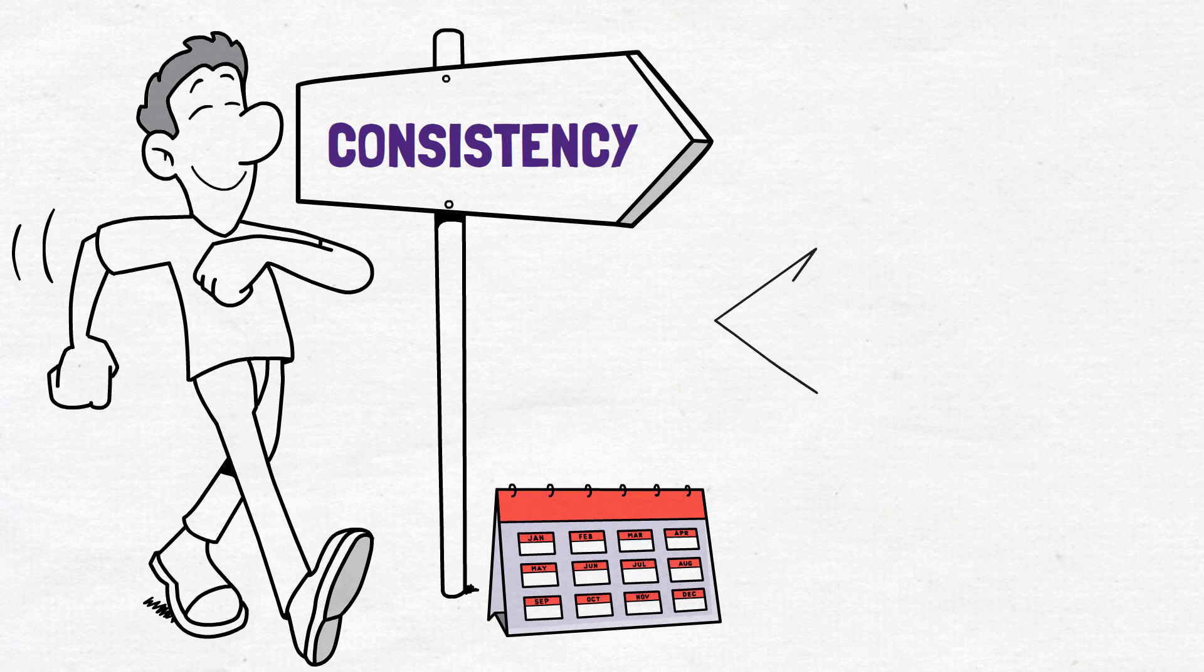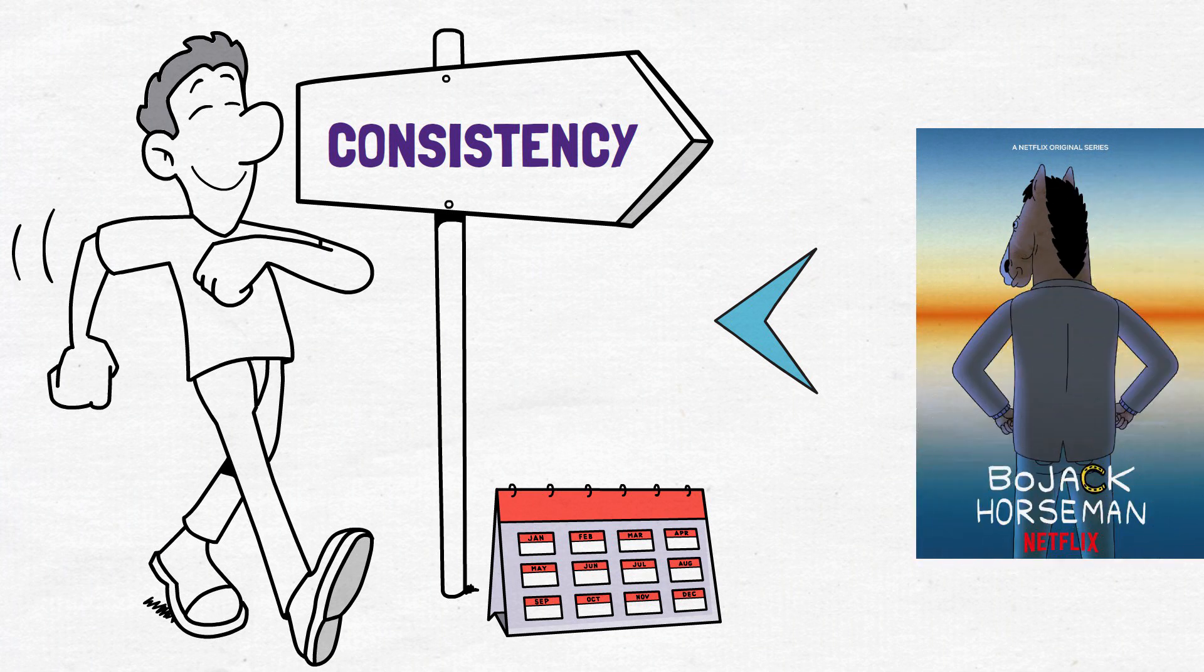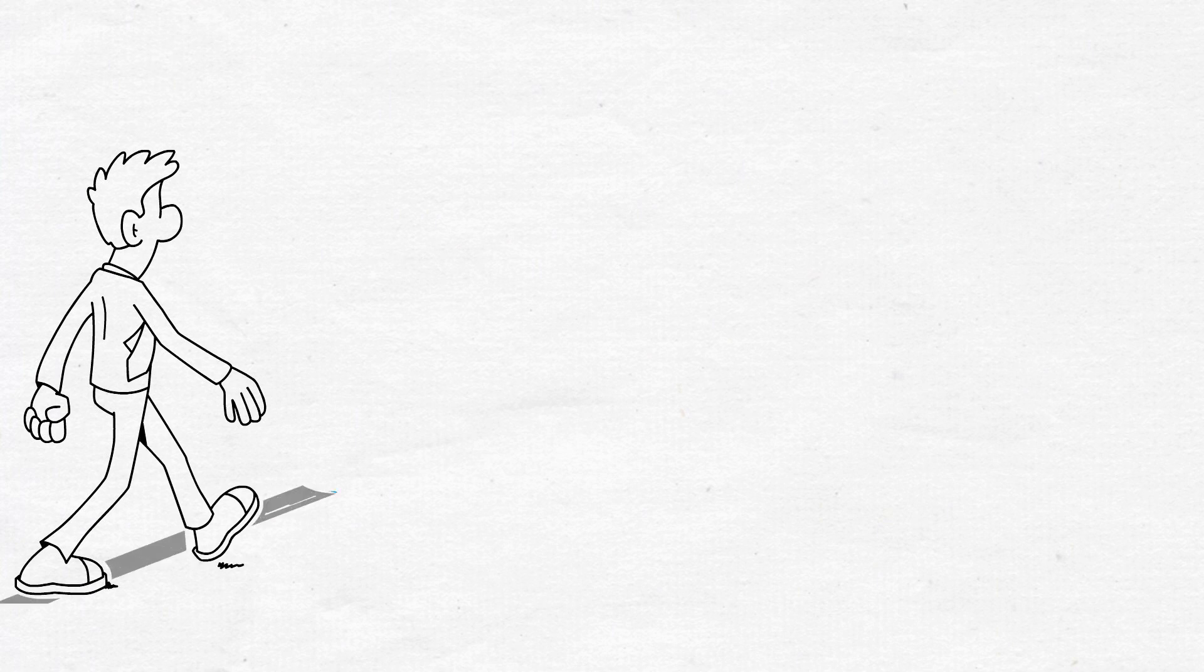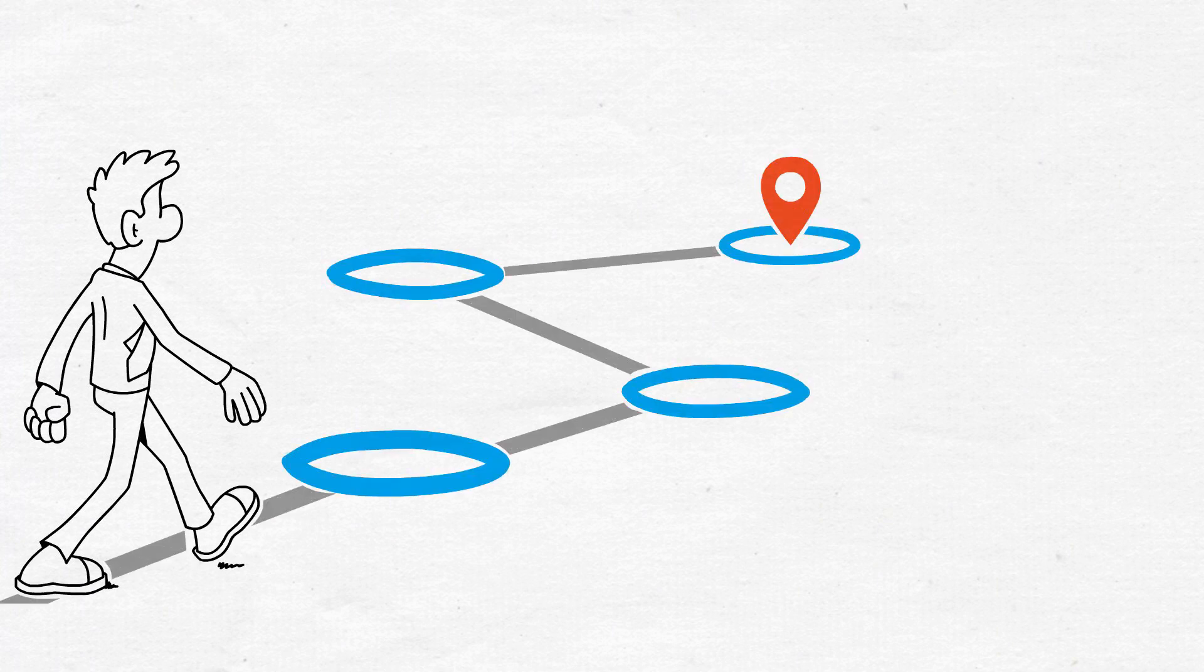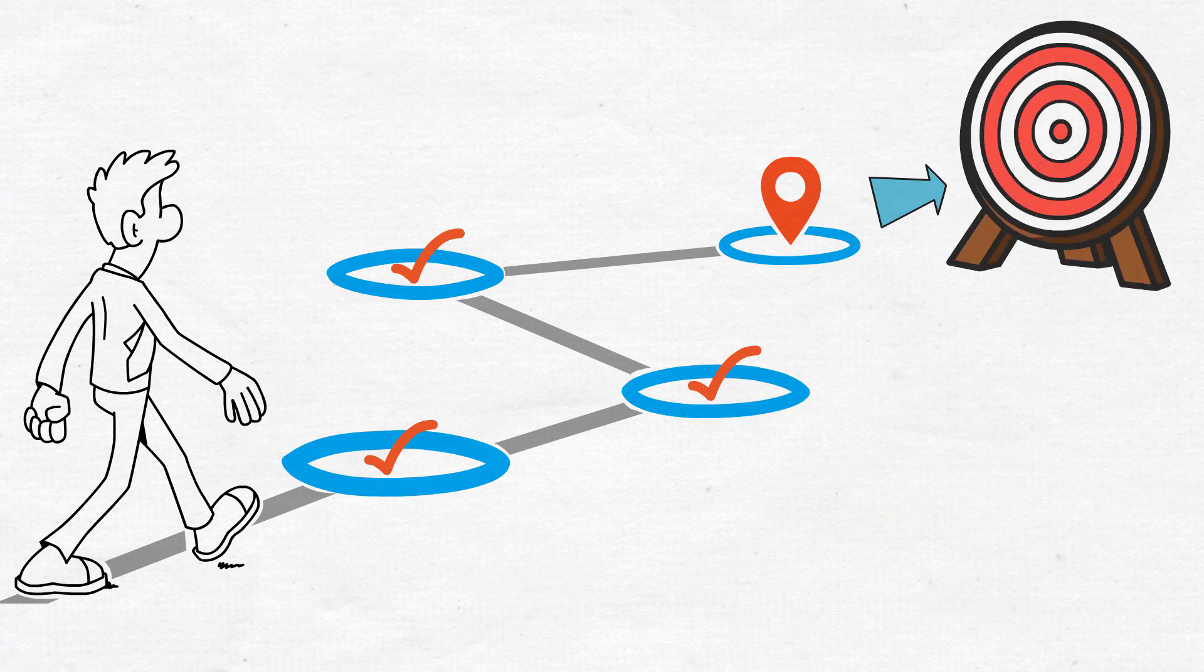Nothing can be a better strategy for success than these lines from BoJack Horseman, a famous series on Netflix. To achieve your long-term goals, you need to make plans regularly and start executing them. Completing short-term goals makes you competent and gives you a sense of accomplishment. Finishing small tasks also prepares you for the real world.